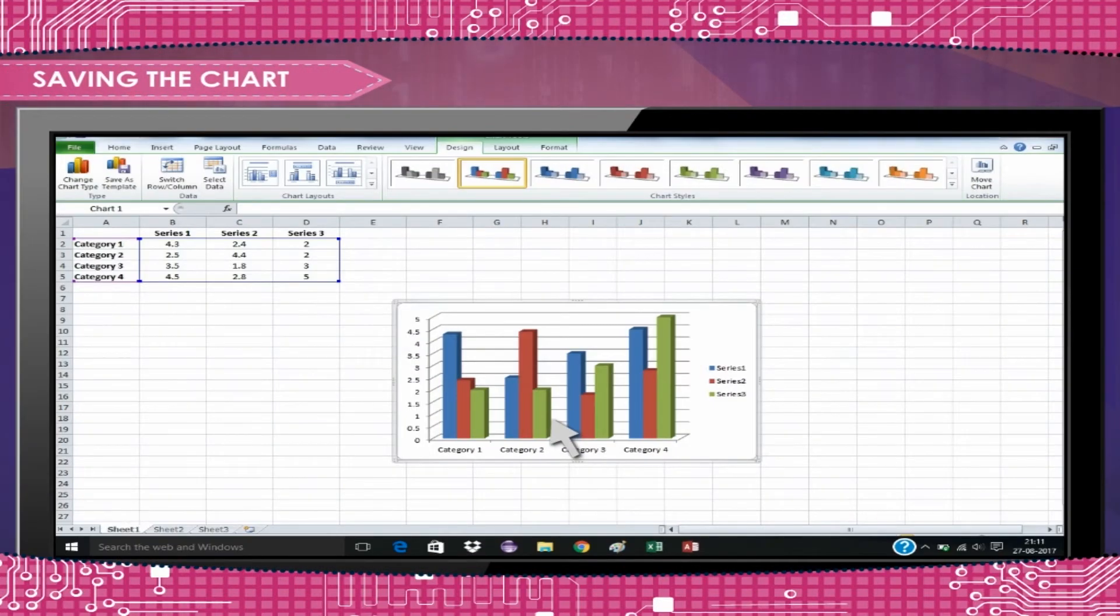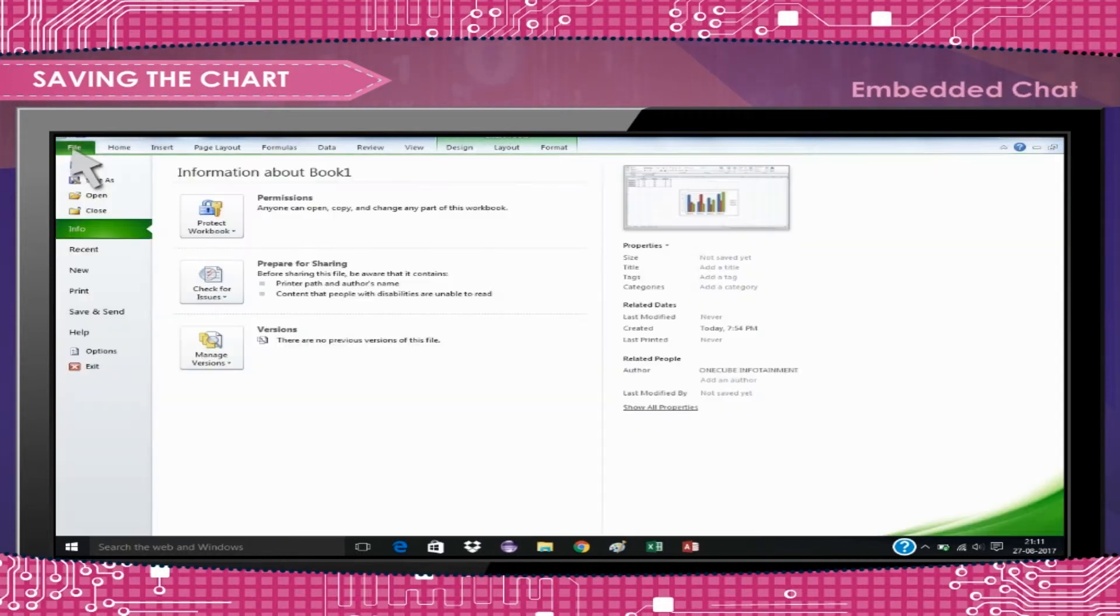Saving the chart: In MS Excel, chart can be saved in two ways. Embedded Chart: It is a chart object that is placed on a worksheet and saved with that worksheet when the workbook is saved.